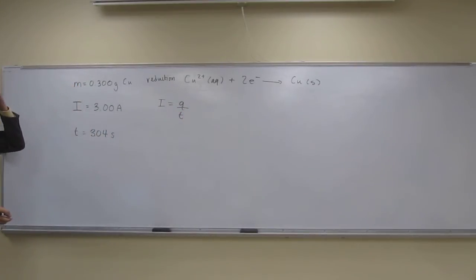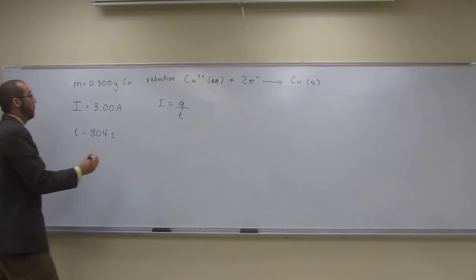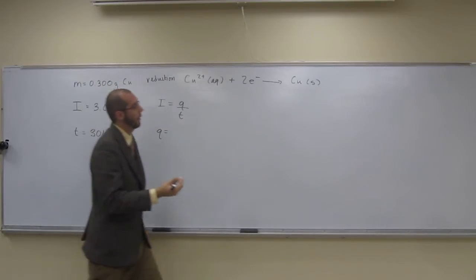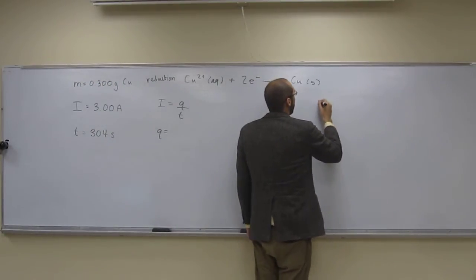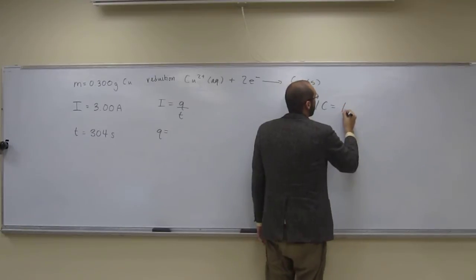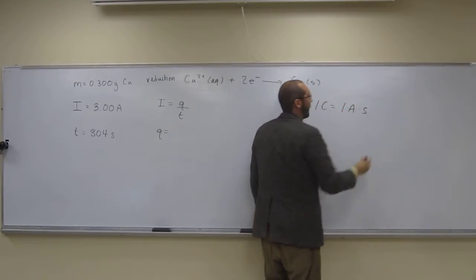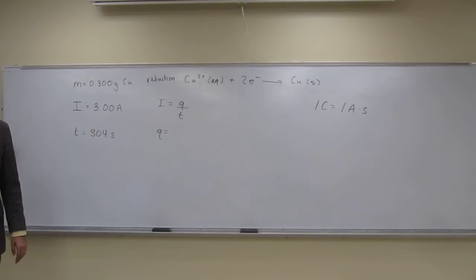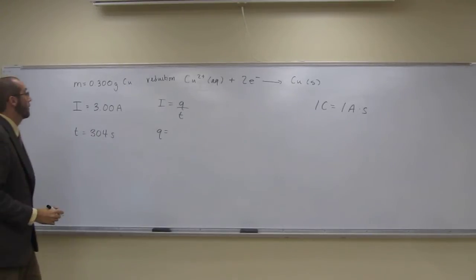So we're going to have to figure out what is that charge. Let's rearrange this equation to solve for Q. The other thing you might want to remember is that one Coulomb is one amp second. If you don't remember that, get that in your head, because that's a conversion that you won't be getting.